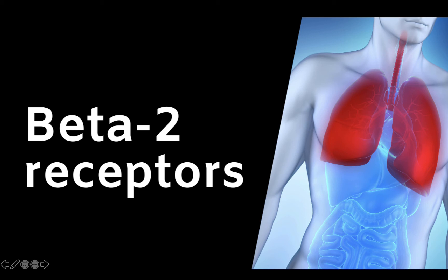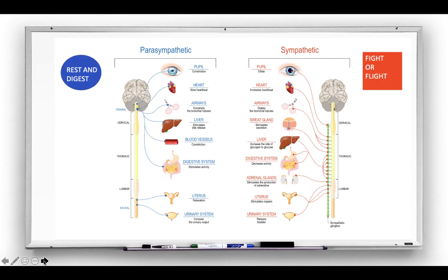Beta-2 receptors. To learn beta-2 receptors we need to review the parasympathetic and the sympathetic nervous system. In the sympathetic system your natural response is either to fight or flight, or the opposite will occur and that would be to rest and digest.